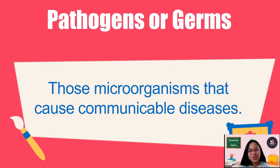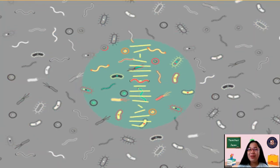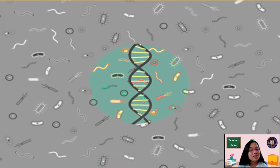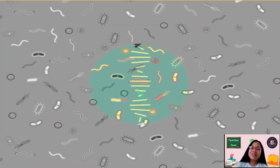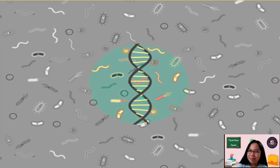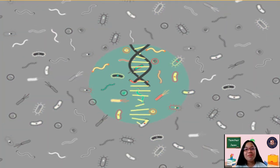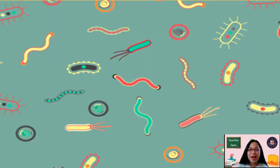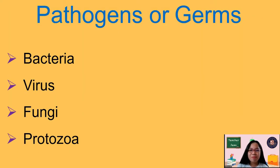Germs or pathogens are everywhere. They might be in your hands right now, in your mouth, or inside your body. We cannot see them right away because of how tiny they are. But despite being so small, don't underestimate them — they can make you sick. They can multiply fast and spread quickly. Now, let's go over the different pathogens, or disease-causing germs.